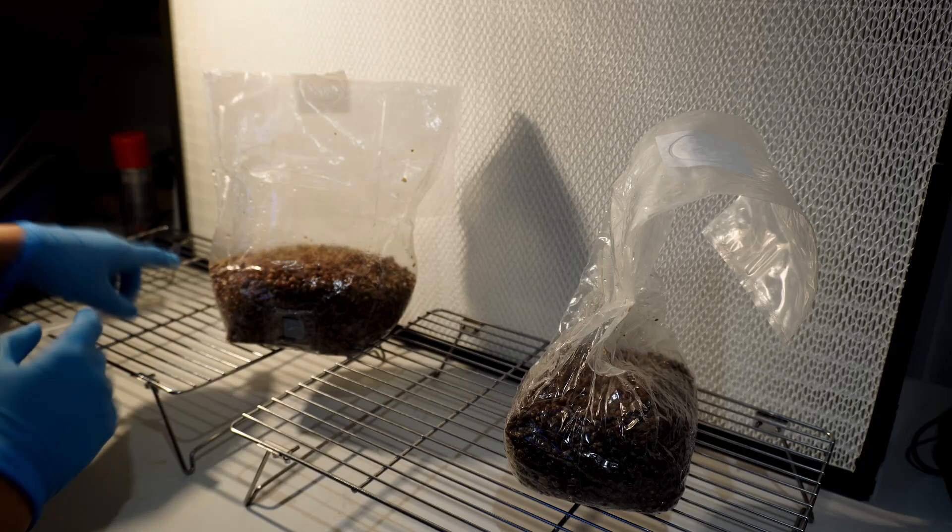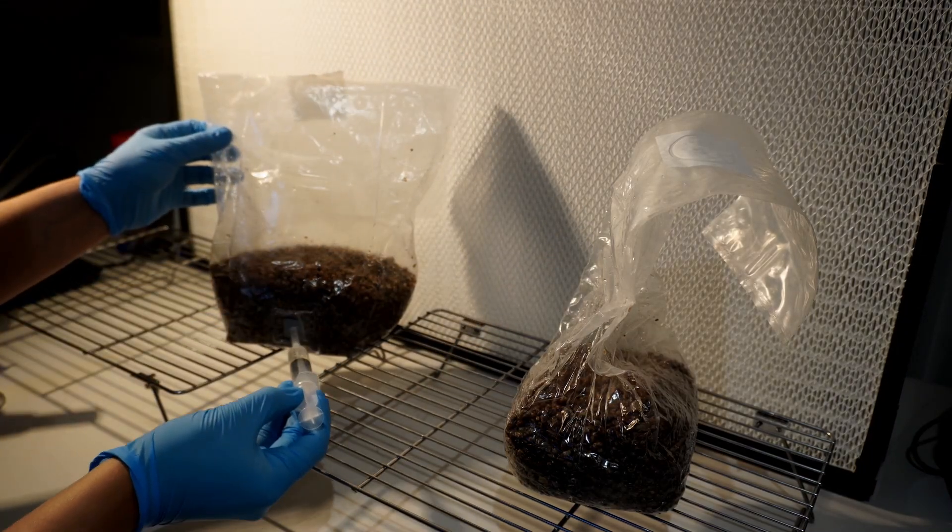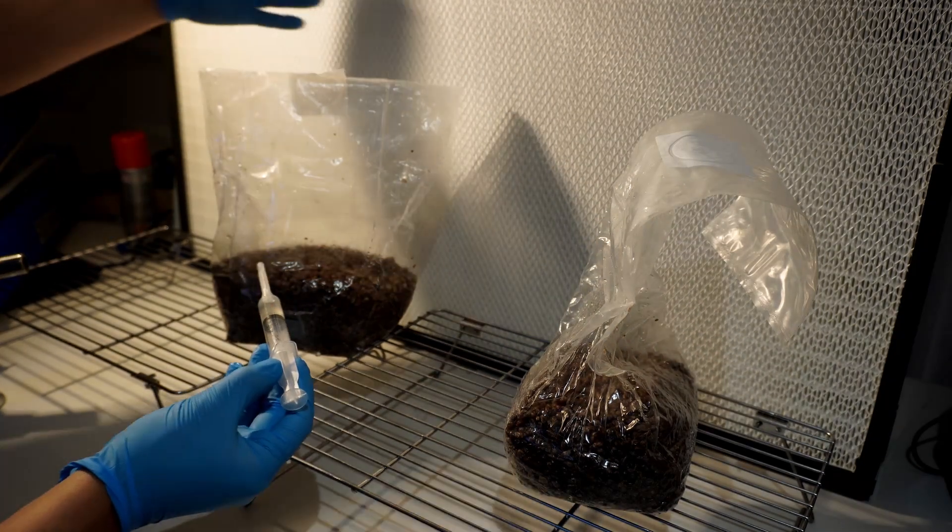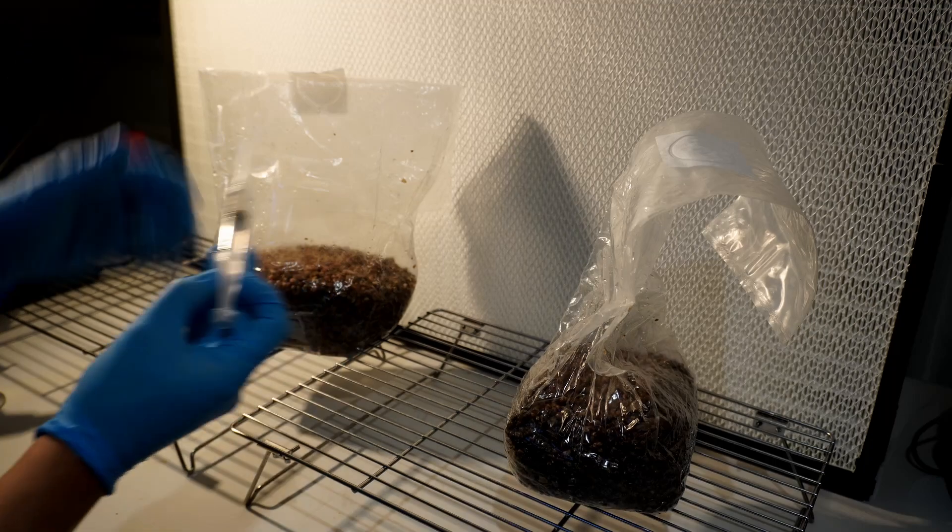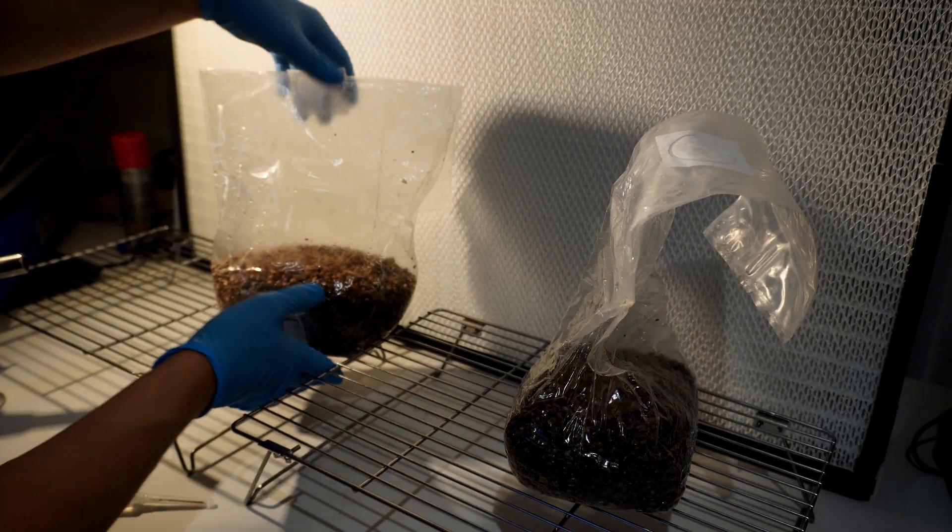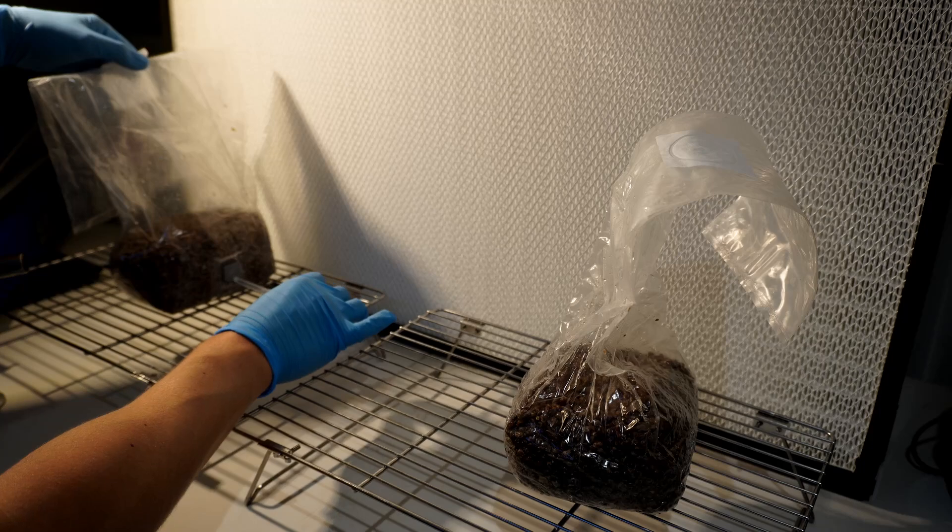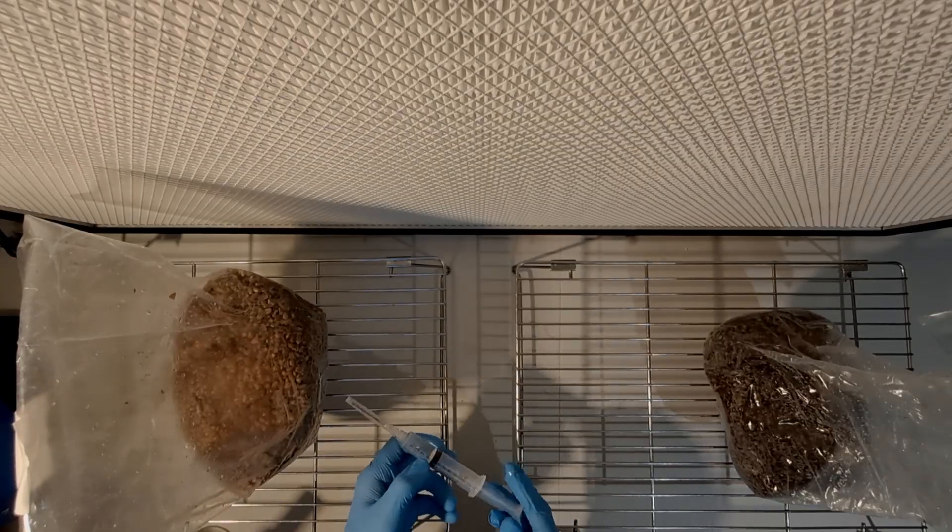When you come to inoculate your grain spawn don't allow the grain spawn bag to block the airflow. If you're injecting coming in from this side then you're essentially blocking off the airflow with your bag. So what you want to do is either turn it to the side or turn it facing up and I'll show you again when I actually go and do the inoculation.